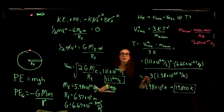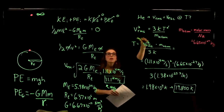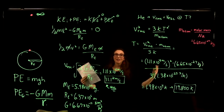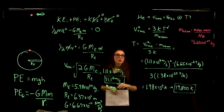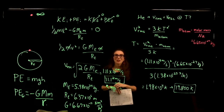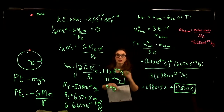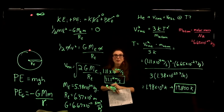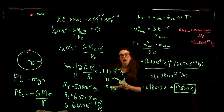That temperature — 19,800 K — is the temperature a helium atom needs to achieve for its root mean squared speed to equal the escape speed of the Earth. We can compare this to the high-altitude temperature in Earth's atmosphere, which is around 250 kelvin. That is much, much smaller than 19,800 K. Yet over billions and billions of years, our Earth's atmosphere has lost a lot of helium.